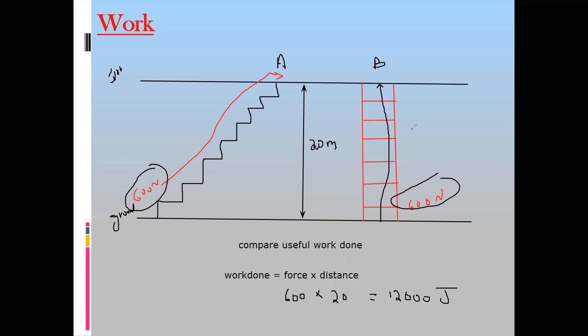There will be waste energies, but the useful work done — the work done to move from ground floor to first floor — for A is the same as for B. This shows that work done does not depend on the route.